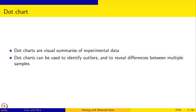The dot chart is another way of presenting results — it also gives complete information but provides nice visual summaries of experimental data. Dot charts can be used to identify outliers, and if you have more than one data set, they will also reveal differences between the different data sets. We are going to see examples of both as we go along in the course.